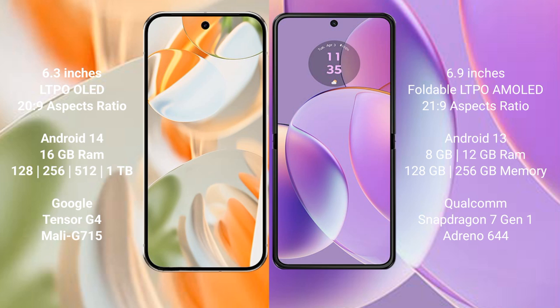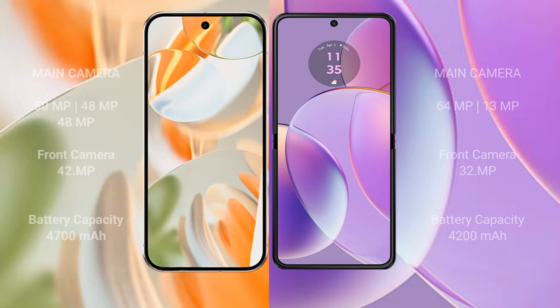The Google Pixel 9 Pro comes with 16GB RAM, and 128GB, 256GB, or 512GB internal storage, powered by the Google Tensor G4 processor with Mali-G715 GPU. The Motorola G40 comes with 8GB or 12GB RAM, and 128GB or 256GB internal storage, powered by the Snapdragon 7 Gen 1 processor with Adreno 644 GPU.